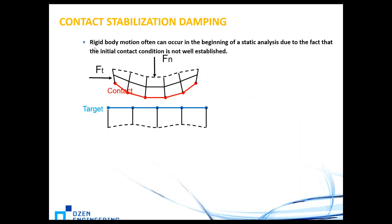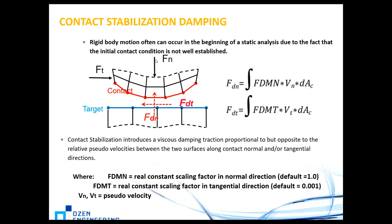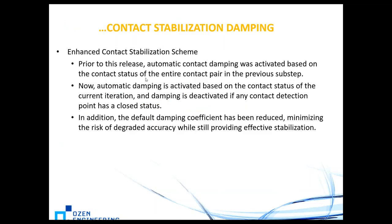With version 16, contact stabilization damping was introduced. Rigid body motion often occurs in the beginning of a static analysis because the initial contact condition is not well established. Contact stabilization introduces a viscous damping traction proportional but opposite to the relative velocities between the two surfaces, which stabilizes the problem. In the past this caused convergence issues, but this contact stabilization has made ANSYS contact solutions a lot better.